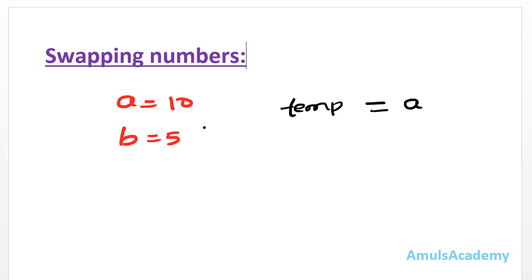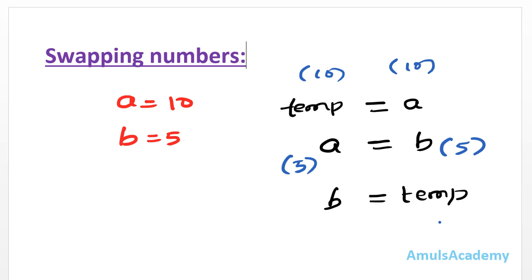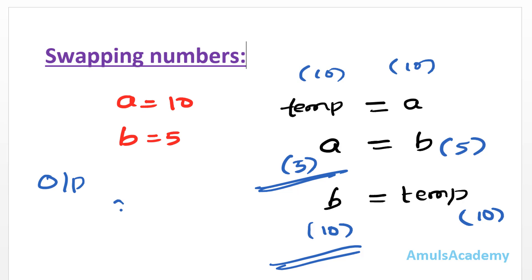Now both temp and a hold the value 10. Next I write a equal to b, which assigns b's value of 5 to a — so now both a and b are 5. Then I write b equal to temp. Since temp holds 10, b becomes 10. So the output is a equals 5 and b equals 10 — the numbers are swapped.